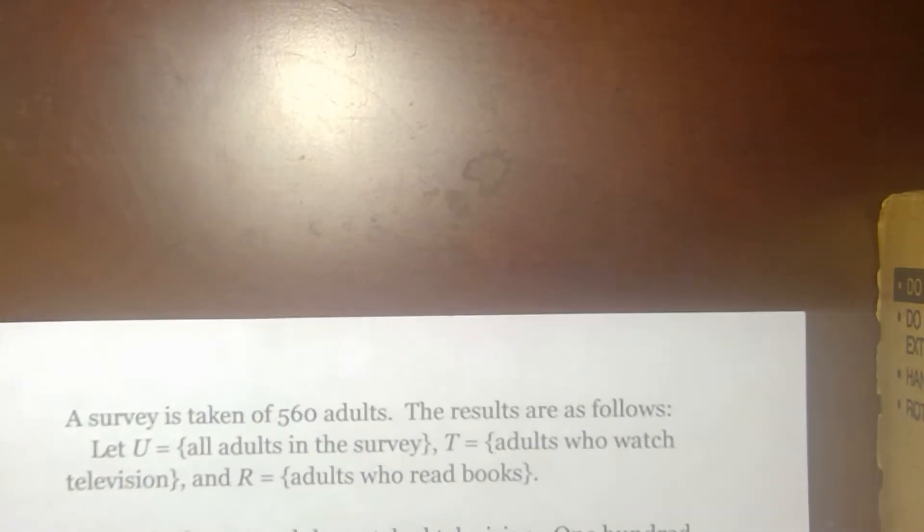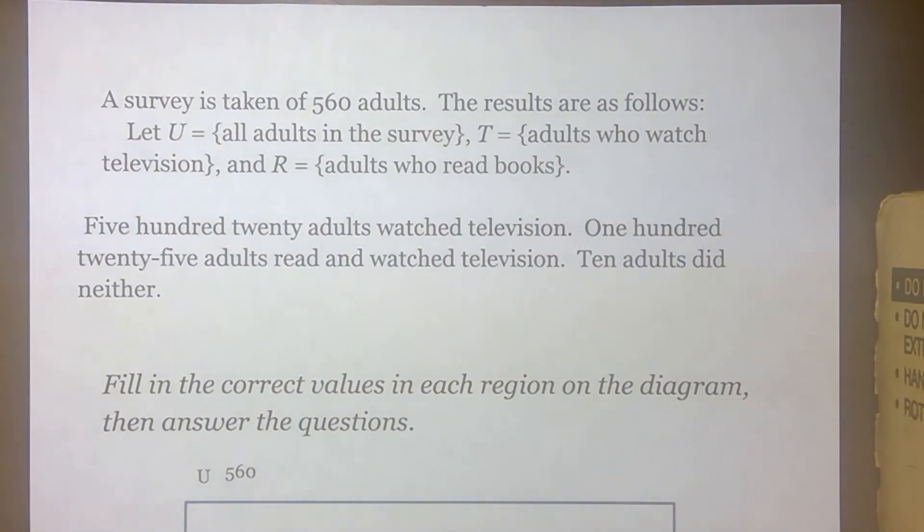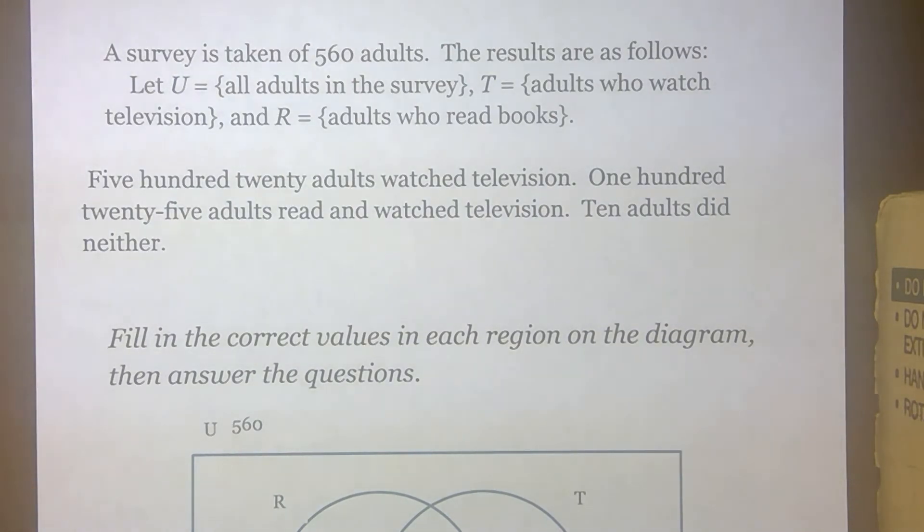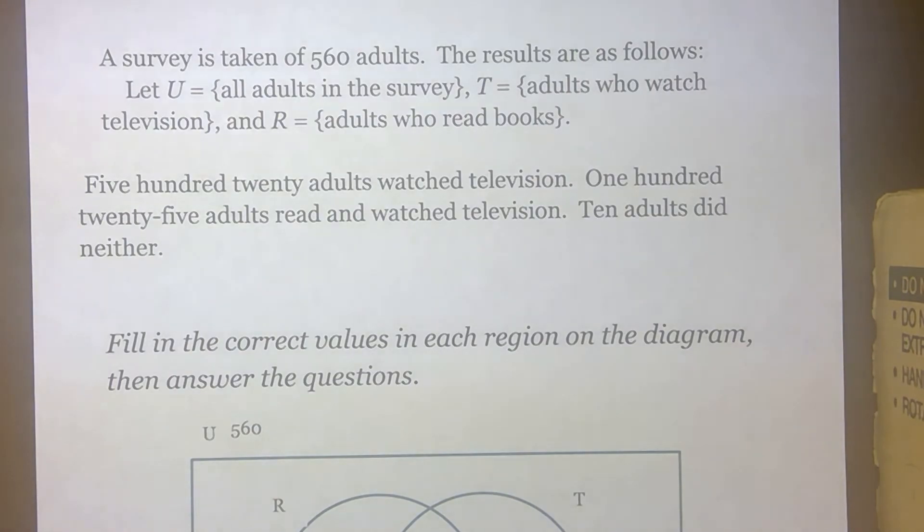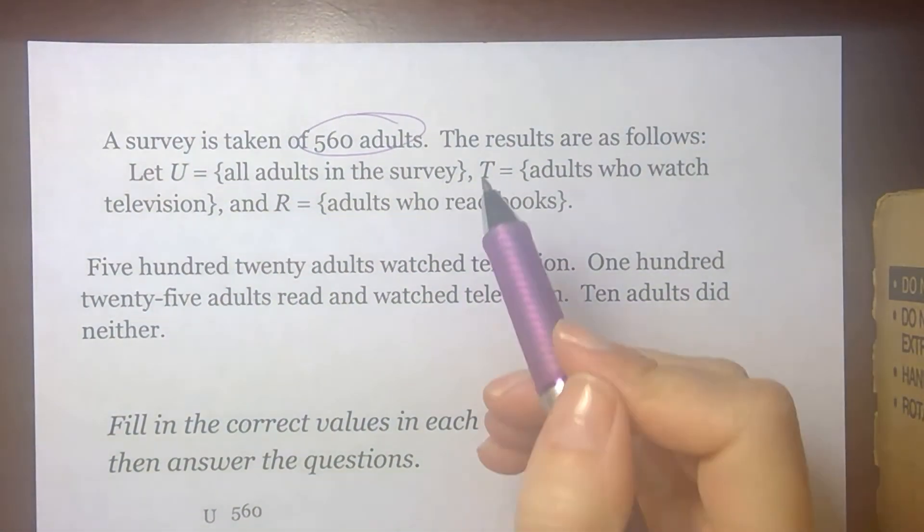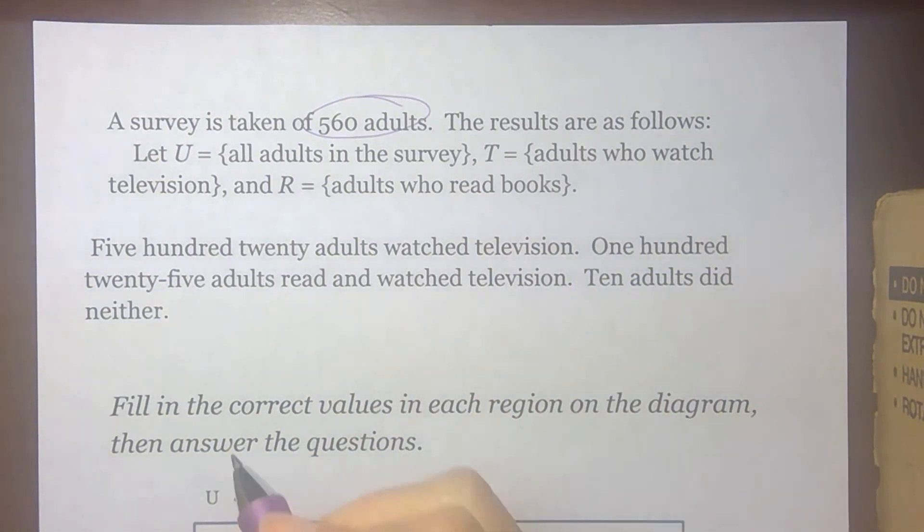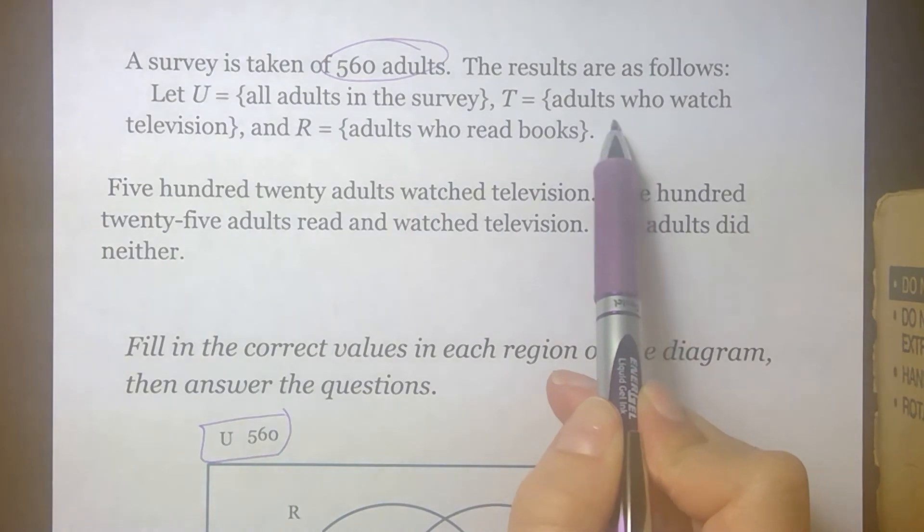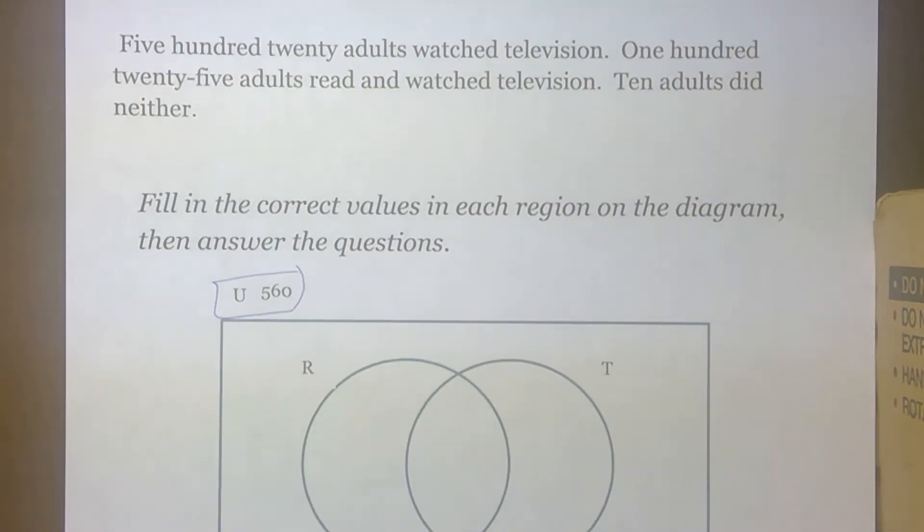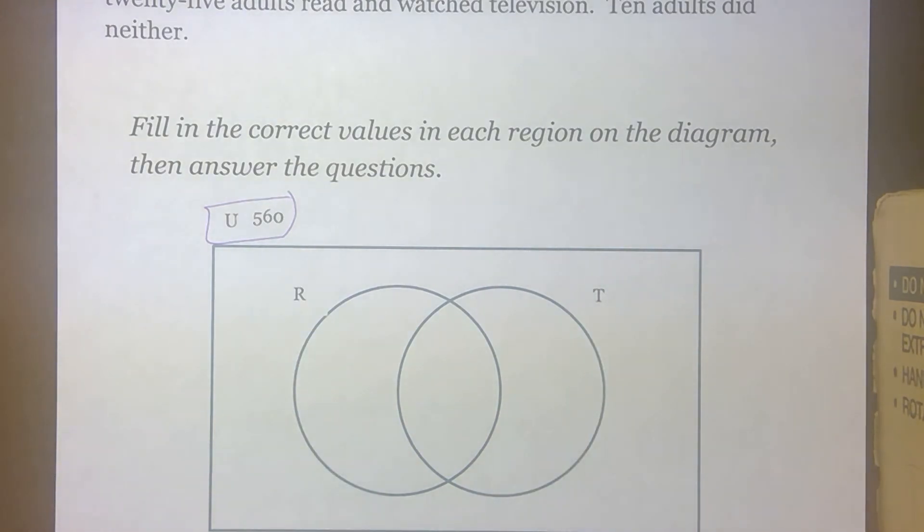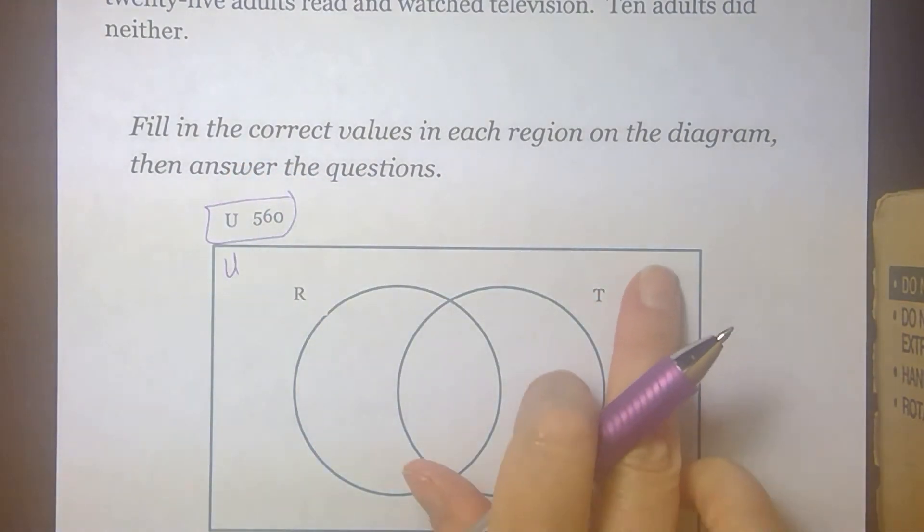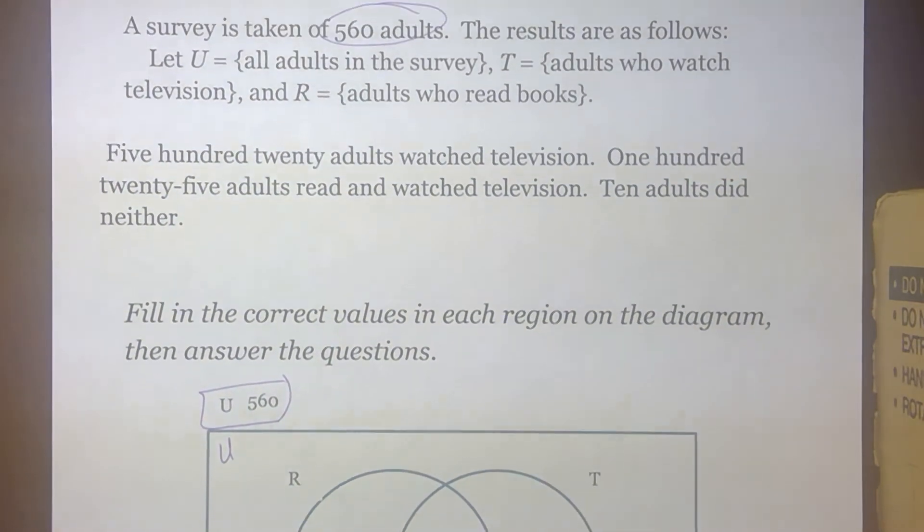The final page for this activity gives us another specific example. And this gives us numbers to go along with it. So we are told that a survey was taken of 560 adults. So our total for U is 560. And that's already stated here. The total number in the universal set are 560 adults. Then we got some results. We've got a T represents the adults who watch television. And R represents the adults who read books. We have our loops labeled as our book reading loop and our TV watching loop. And then we've got our universal set. The people who don't do either will be out here represented in that other region.